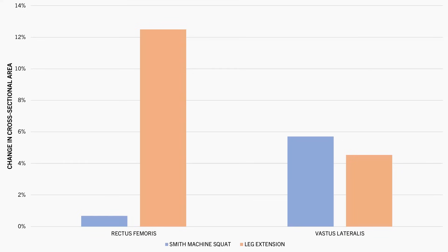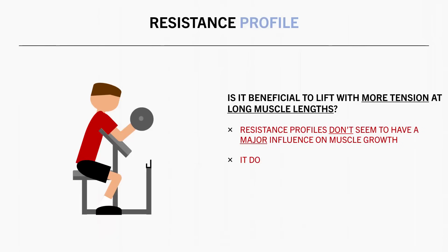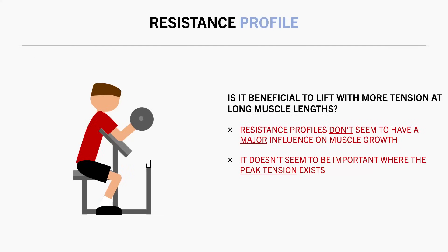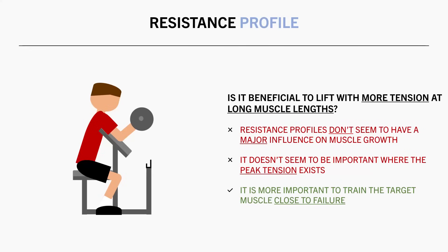From the evidence we have, there doesn't seem to be a major influence on muscle growth in terms of whether peak tension exists at longer or shorter muscle lengths. It seems to be more important to train close to failure, ensuring the target muscle is the limiter of the set.